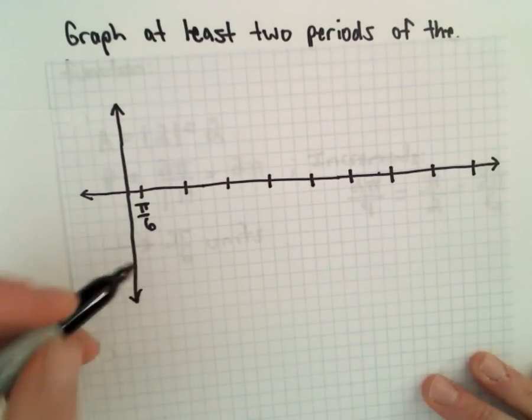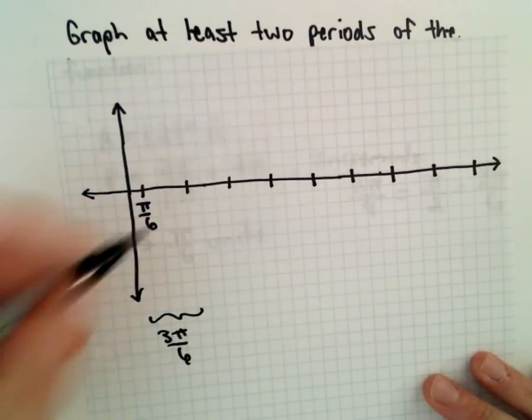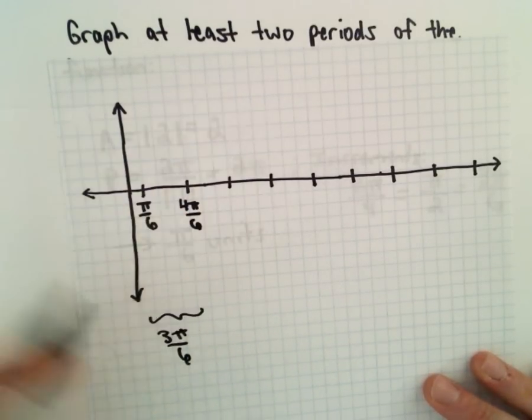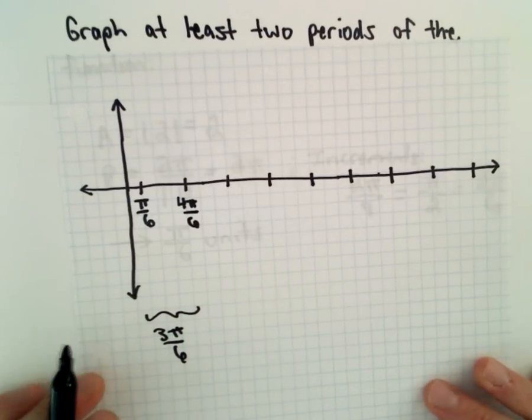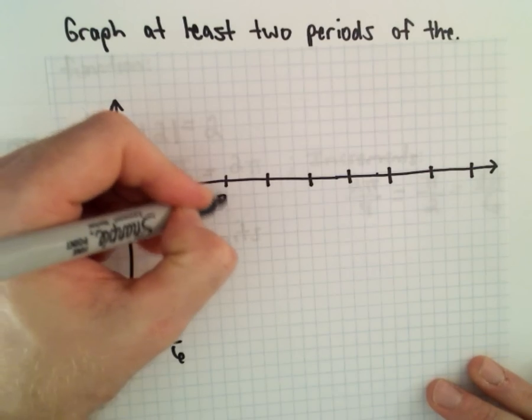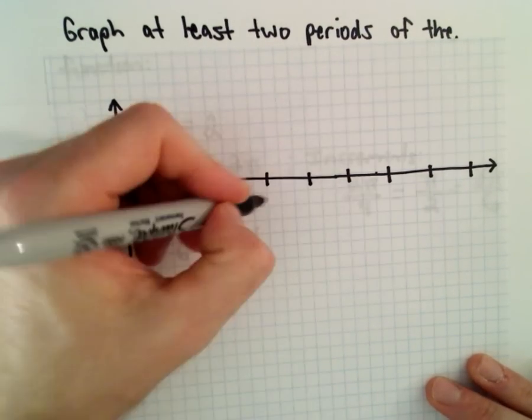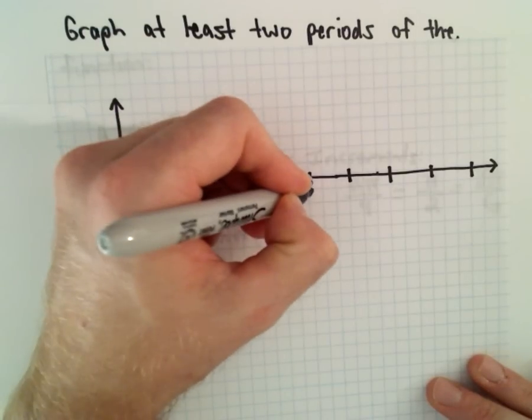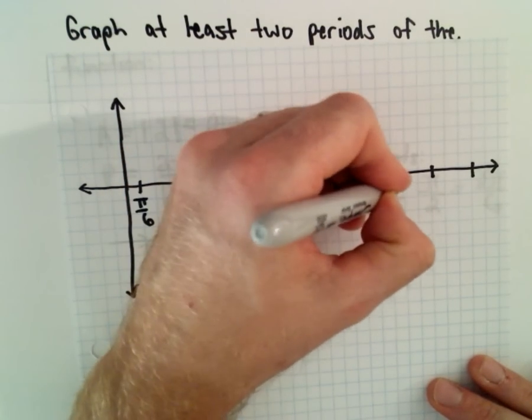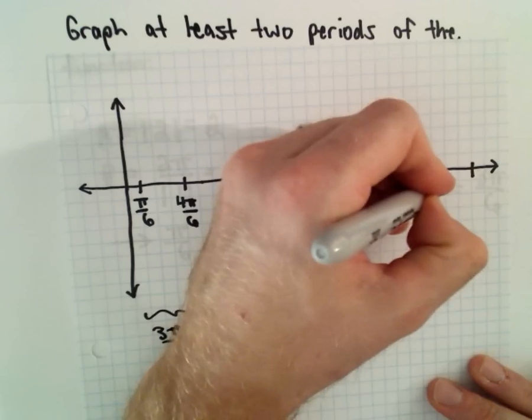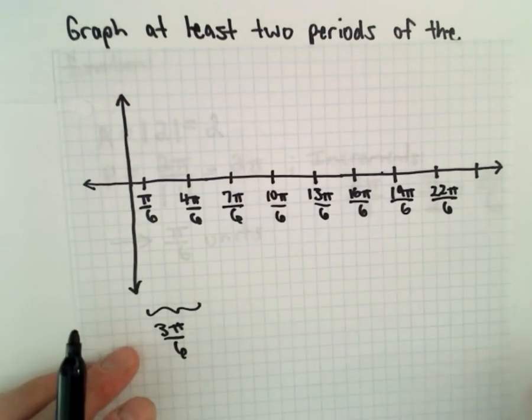So if we started at pi over 6, if I move over 3 pi over 6 units, that's going to put me at 4 pi over 6. And you could certainly reduce this to 2 pi over 3, I'm not going to. Then we have 7 pi over 6. And I'm not going to reduce it because, to me, it's easier. It helps me see the pattern. 10 pi over 6, 13 pi over 6, 16 pi over 6, 19 pi over 6, 22 pi over 6. I think that'll be enough to give us 2 periods.